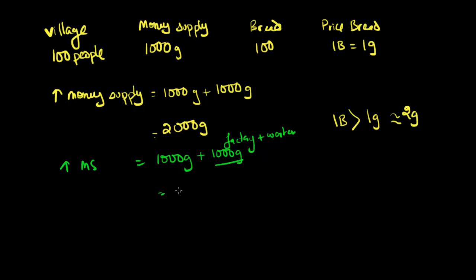The money supply, as previously, is 2000 gold coins. But assuming this factory is actually able to produce bread, that would imply the amount of bread in the village will go up. Let's say this new factory is able to create another 100 units of bread a month. That means in the village there's now going to be 200 units of bread.